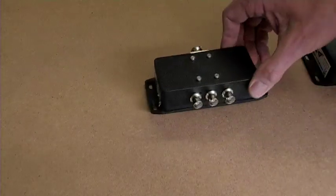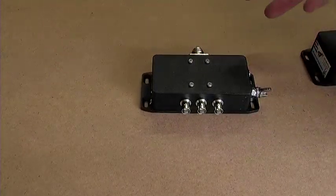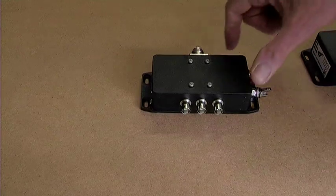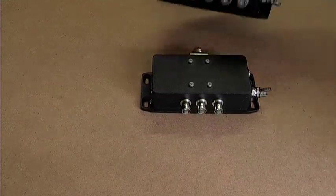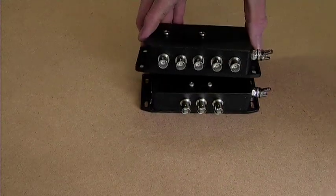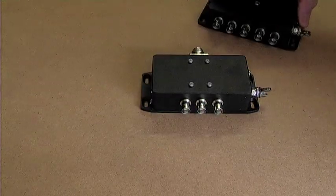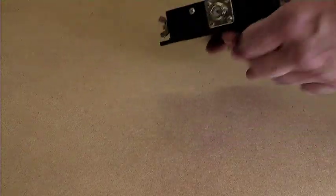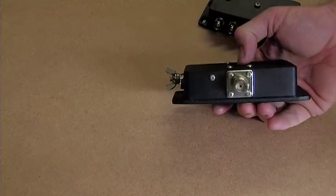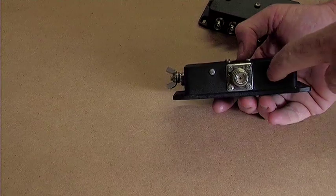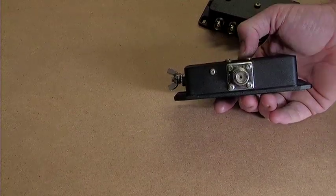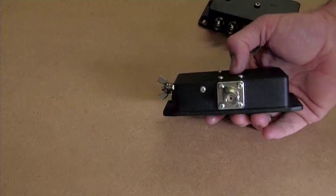When we're making specials, if it's BNCs or TNCs or SMA connectors, we can do five outputs no problem. If you start adding N-types or SO239s, we can only get four on each side, so we make four-way splitters when it's a large connector.